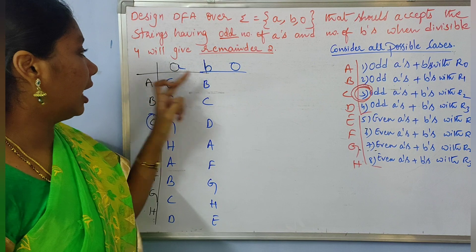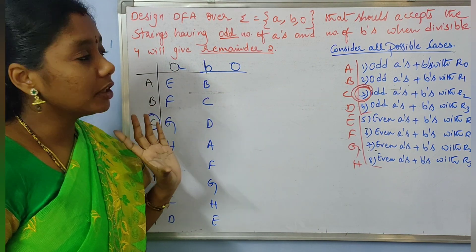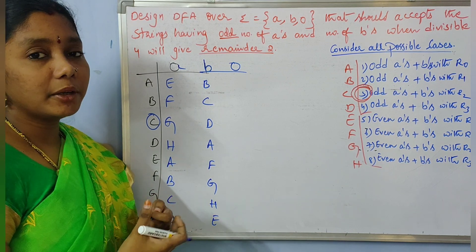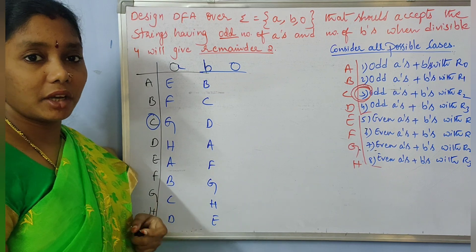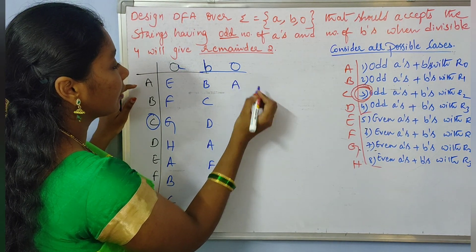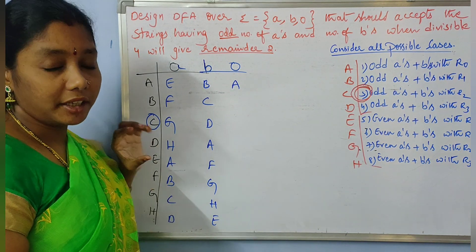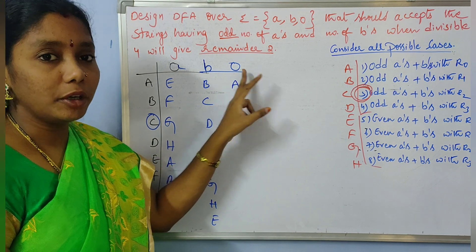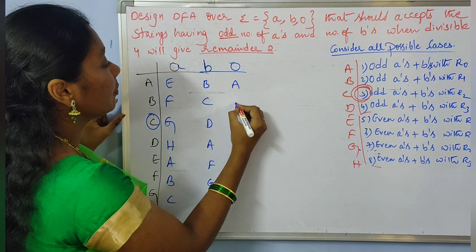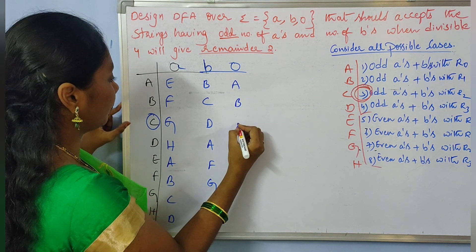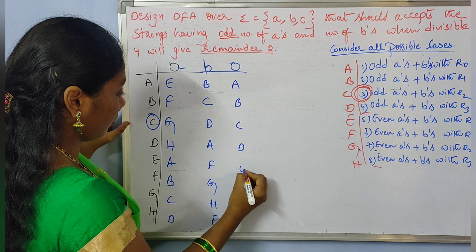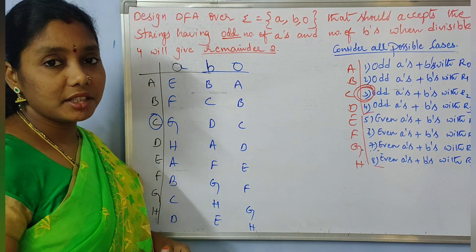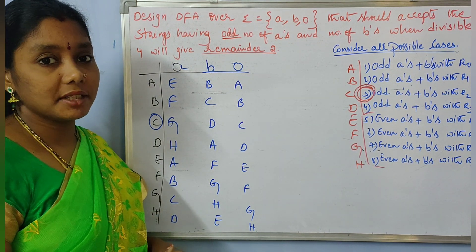For input '0': there is no restriction given in the problem for the input alphabet 0. So we can have any number of 0's at any state. Therefore, we add self-loops at each state for input '0'. This completes the transition table, and now let us draw the transition diagram from this table.